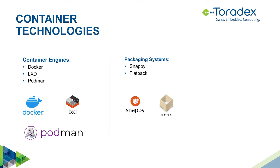If you are a desktop application developer, you may be more interested in packaging systems rather than real container systems. Packaging systems like Snappy and Flatpak also use container technology to pack software together. That means you can select a base operating system like Ubuntu 18.04, develop your application on top of that, and if you ship it to a different Linux system, it will still use the root file system of the Ubuntu system — making your application independent of the base system.